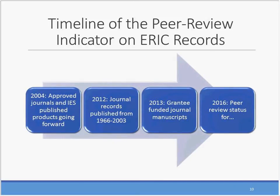ERIC began adding the peer review indicator to new journal article records and work published by the Institute of Education Sciences in 2004. In 2012, ERIC updated the peer review indicator on journal records published since 1966. In 2013, we started adding this indicator for grantee-funded journal manuscripts. Over the years, we've made these enhancements to indicate to users what content has gone through a peer review process. We are proposing to further extend this flag to gray literature sources with a proven peer review process.